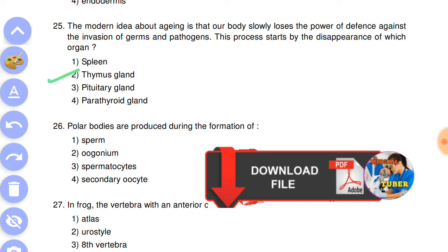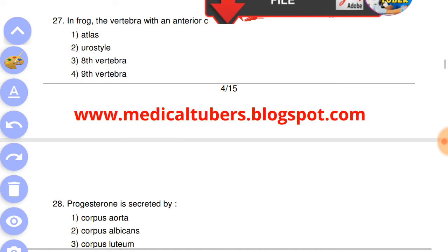Next question: polar bodies are produced during the formation of answer is the fourth, secondary oocytes. Question number 27: in frog, the vertebra with an anterior - answer is the fourth, ninth vertebra.